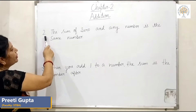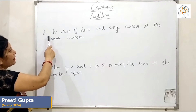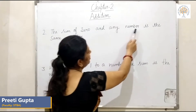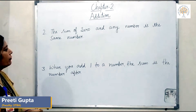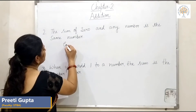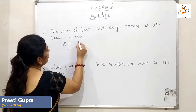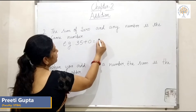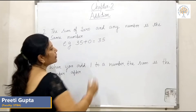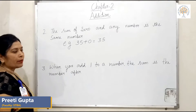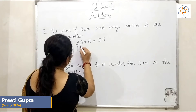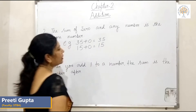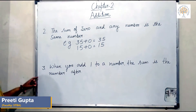Property number 2 is that the sum of 0 and any number is the same number. For example, 35 plus 0 is equal to 35. Take another example: 15 plus 0 is equal to 15.